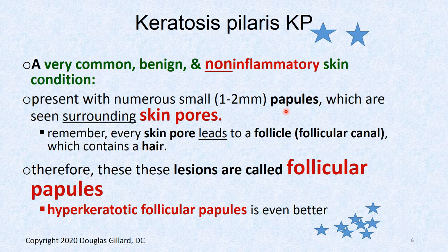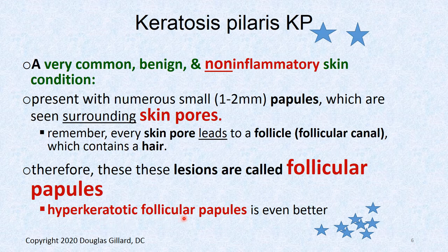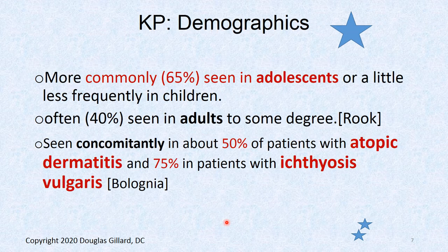The key with this one is, unlike acne which clogs up the skin pores, this one dumps a kind of barrier around the skin pore. A skin pore leads to a follicle — a follicular canal — and the hair follicle is contained within a little container called the follicular canal. So these papules are often called hyperkeratotic follicular papules.